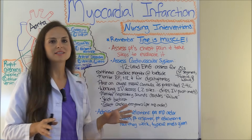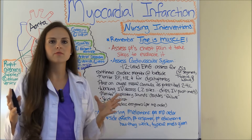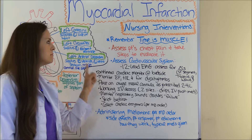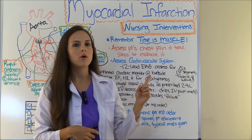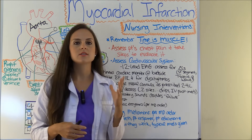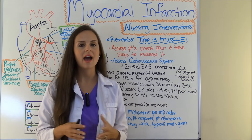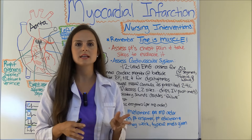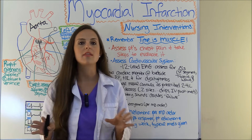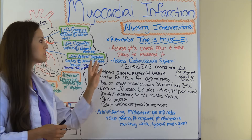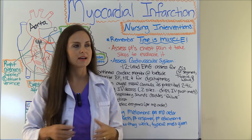So let's get started. First, let's talk about nursing interventions — what are you going to be doing for this patient as the nurse? Remember, time is muscle. Those cells in the heart, when they quit receiving blood, they die really fast, and within 30 minutes it's irreversible. We can't fix them. Once they're gone, they are gone — they cannot be replaced. So as a nurse, we want to make sure we're assessing our patients and acting fast.